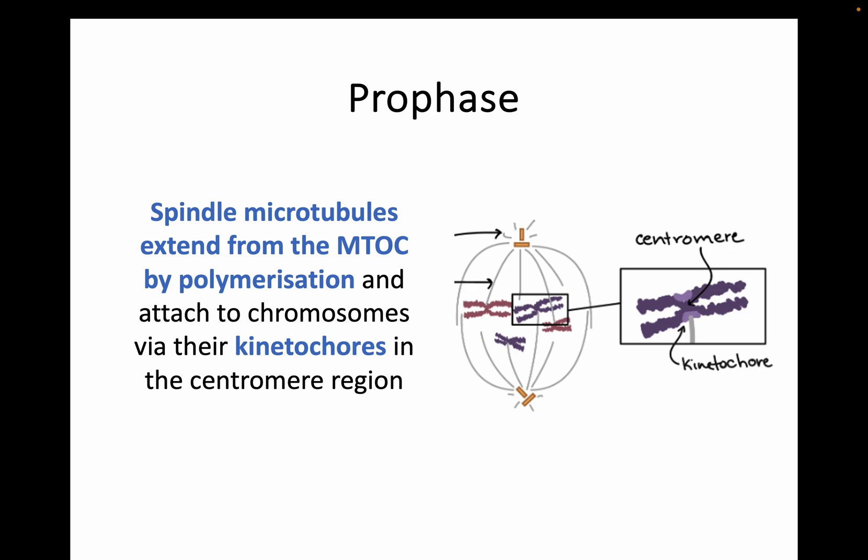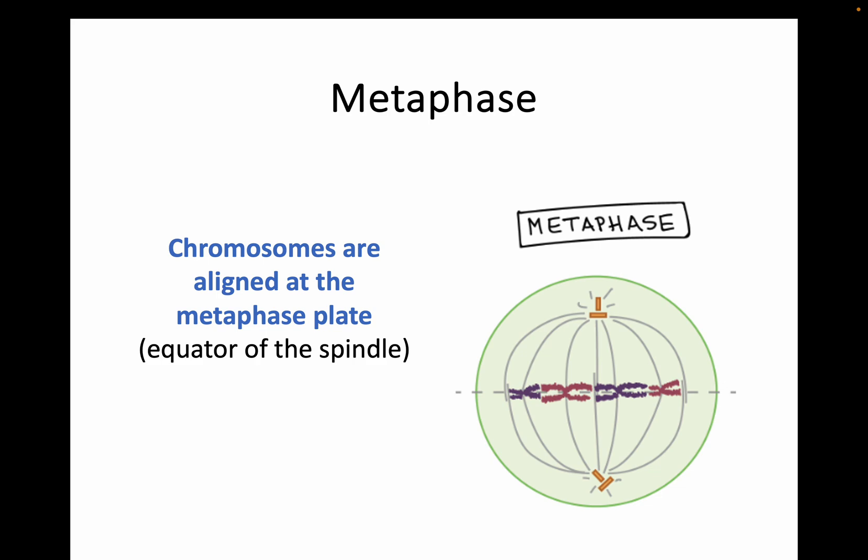You may remember from National 5 that spindle fibres — or spindle microtubules — attach to the chromosomes at the centromere. It's quite specific: they don't attach to the chromatids themselves, it's the centromere. Going into a little bit more detail, you can see in the diagram here there's an area of the centromere called the kinetochore, and that's where the spindle fibres attach. They lock onto the kinetochore and then pull these chromatids apart. Next is metaphase — the middle part — where the chromosomes line up at the equator. Rather than referring to it as the equator, we now call it the metaphase plate. The chromosomes are all lined up with spindle microtubules attached at the kinetochore, ready to be pulled apart.